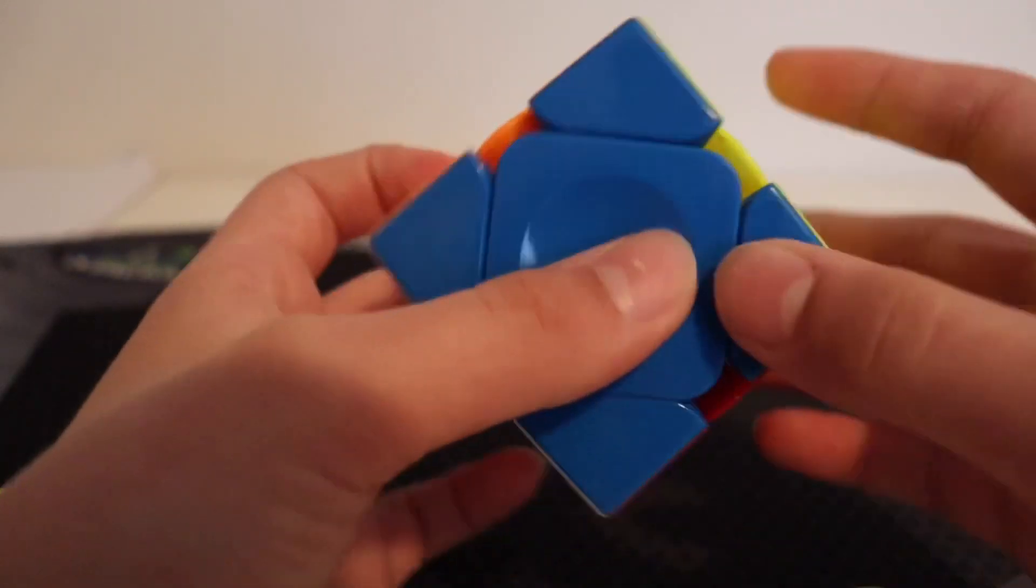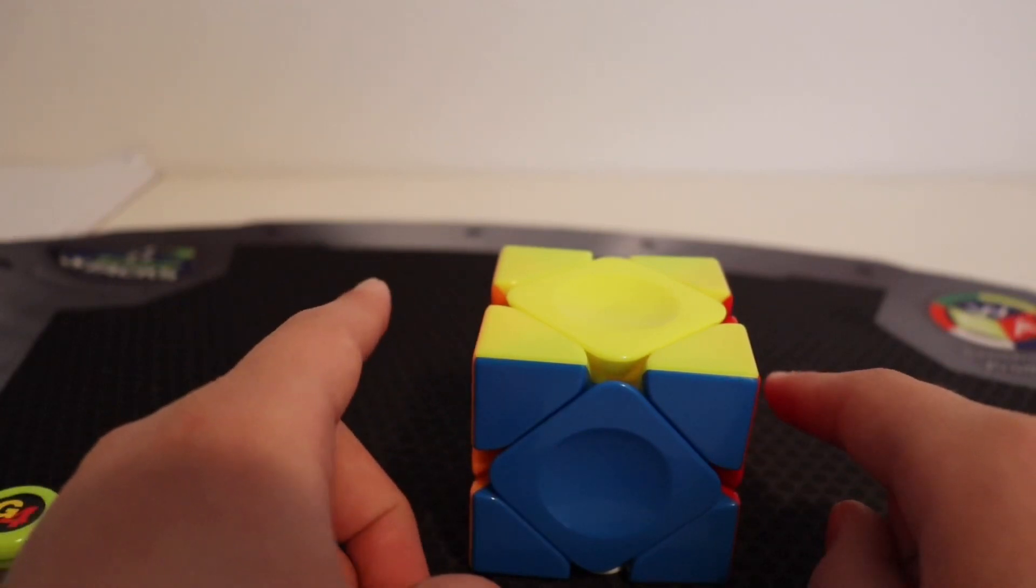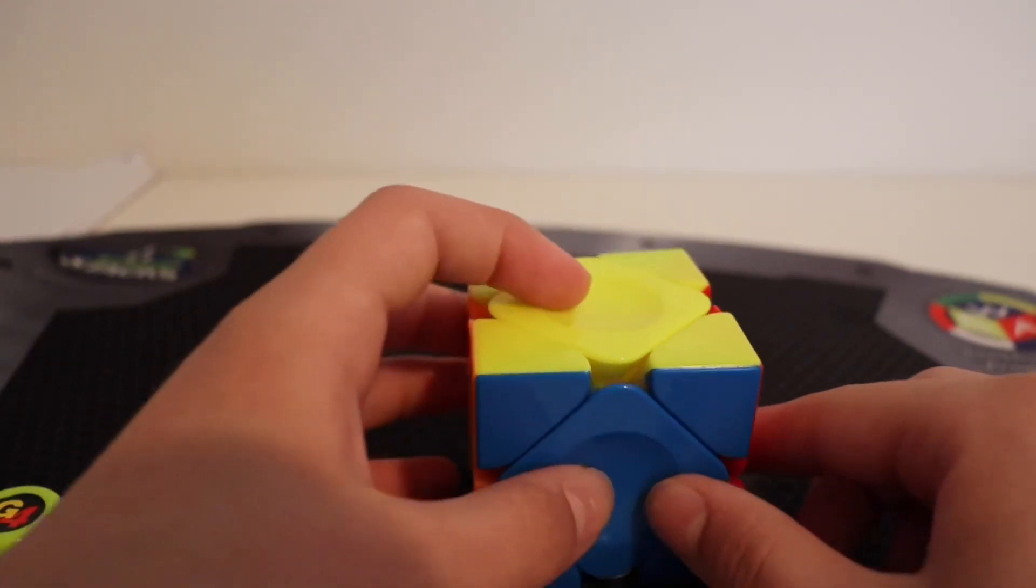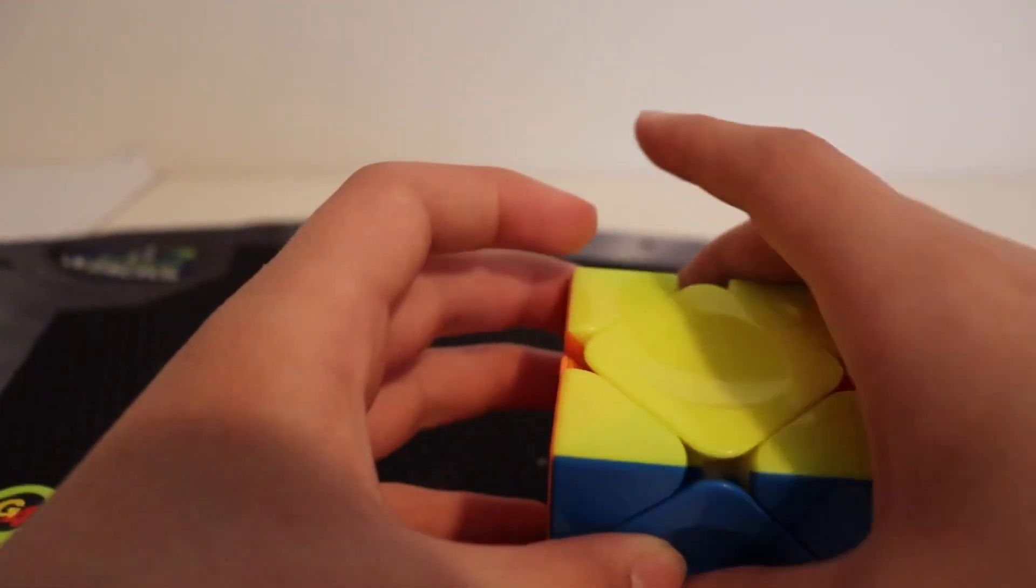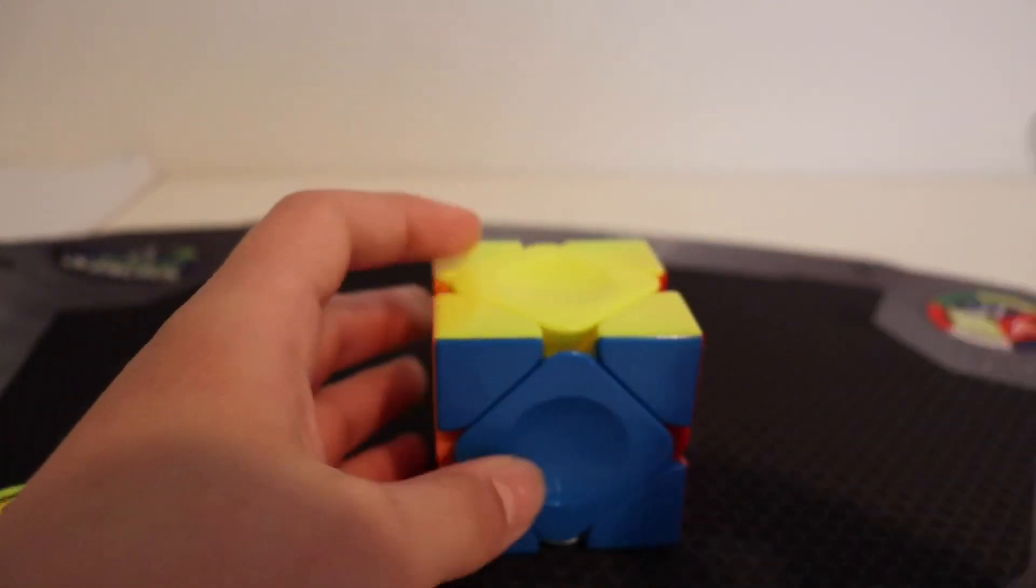So, do the U-perm there, and then you'll get a U-perm here. So, the reason this is better is if you do the one that's across from the U-center, then it will cause it to have a U-perm going this way instead of going this way. It's a lot harder to find it and then re-grip.